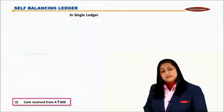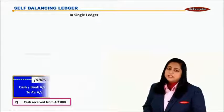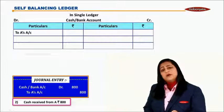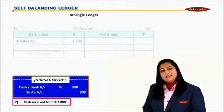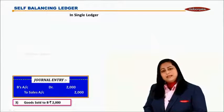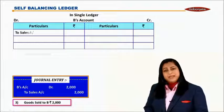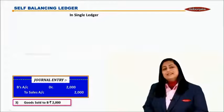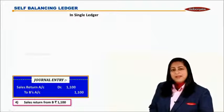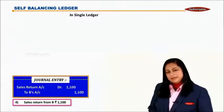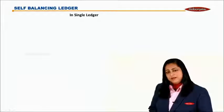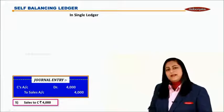When cash is received from A, the entry is cash/bank account debit to A's account, with posting in cash/bank account on the debit side and in A's account on the credit side. Goods sold to B: B's account debit to sales account — B's account on the debit side and sales account on the credit side. Then there is a sales return from B, which will appear in B's account on the credit side.